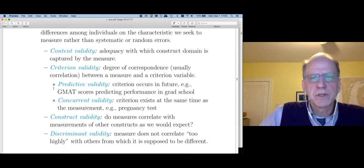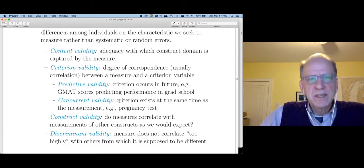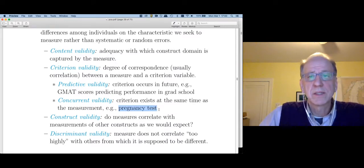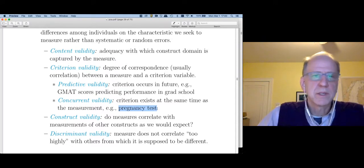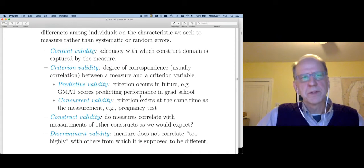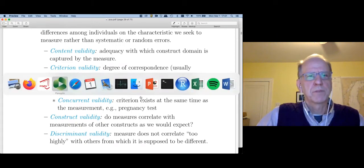Concurrent validity, on the other hand, measures whether the criterion exists at the same time. So the classic example could be something like a pregnancy test. A good pregnancy test would accurately assess whether or not the subject was or was not pregnant. I'd like to give you another example of predictive validity. This concerns the measure of customer satisfaction.